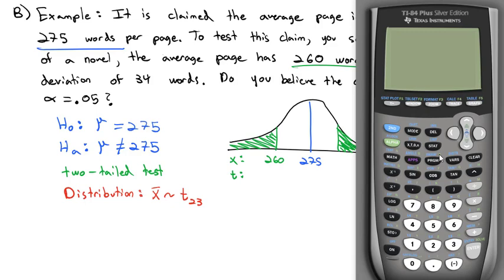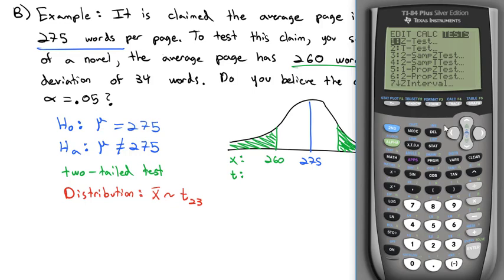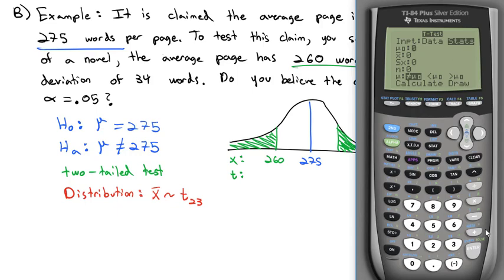Hit the STAT button, scroll over to TESTS, scroll down to the T-Test. We're going to input the actual statistics, not the individual data values, so highlight STATS. Mu sub 0, the null hypothesis, is 275. X-bar, the sample mean, is 260. Sx, the standard deviation of the sample, is 34. The sample size n is 24. Make sure you highlight the alternate hypothesis symbol — not equal to — and scroll down to CALCULATE.